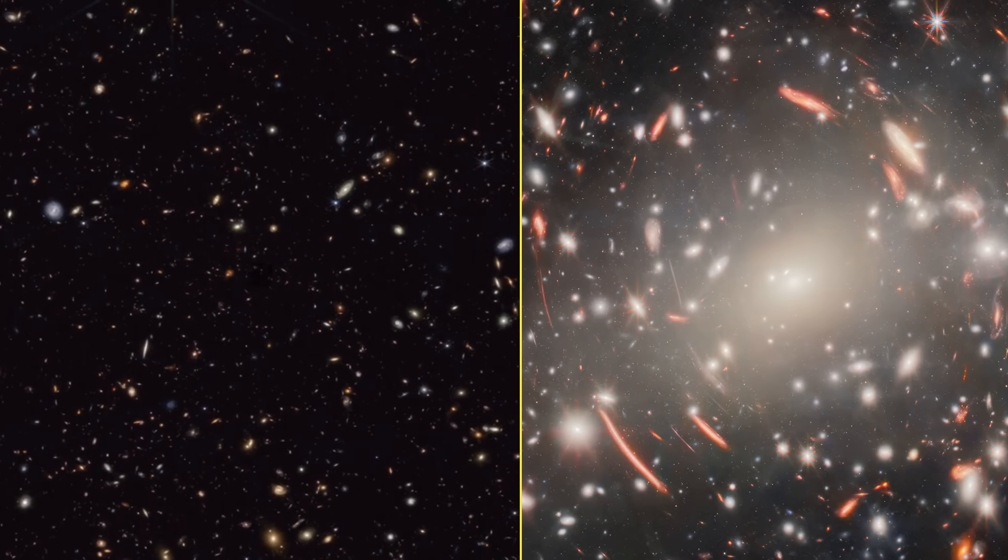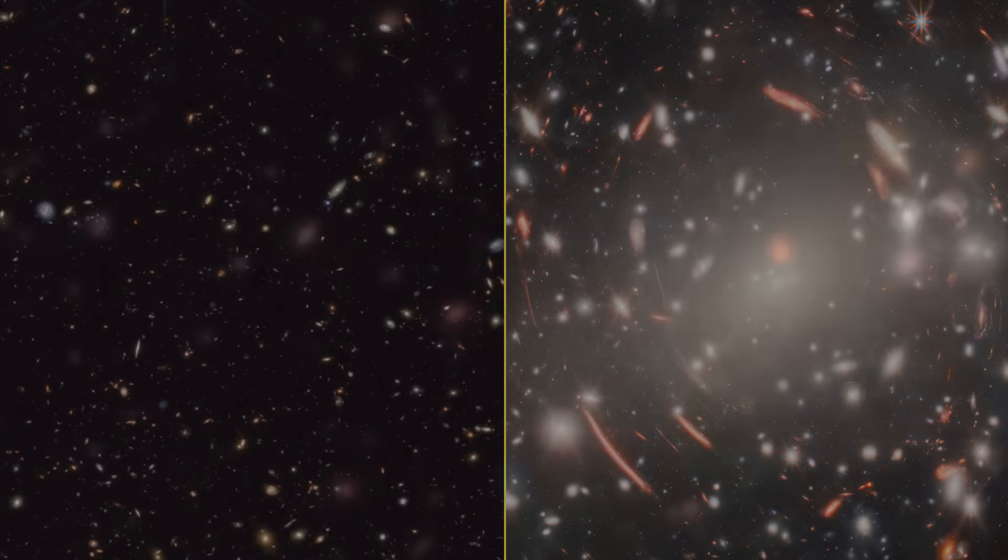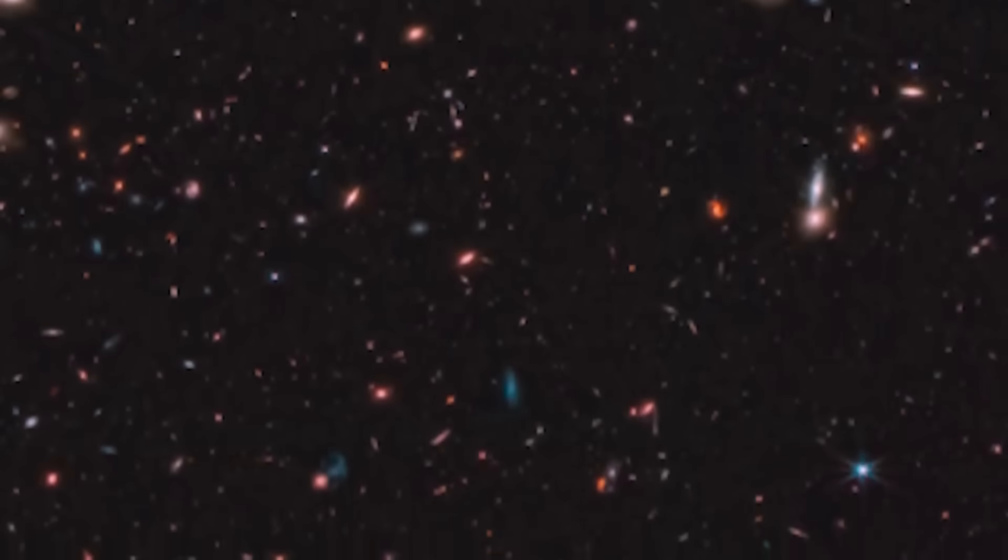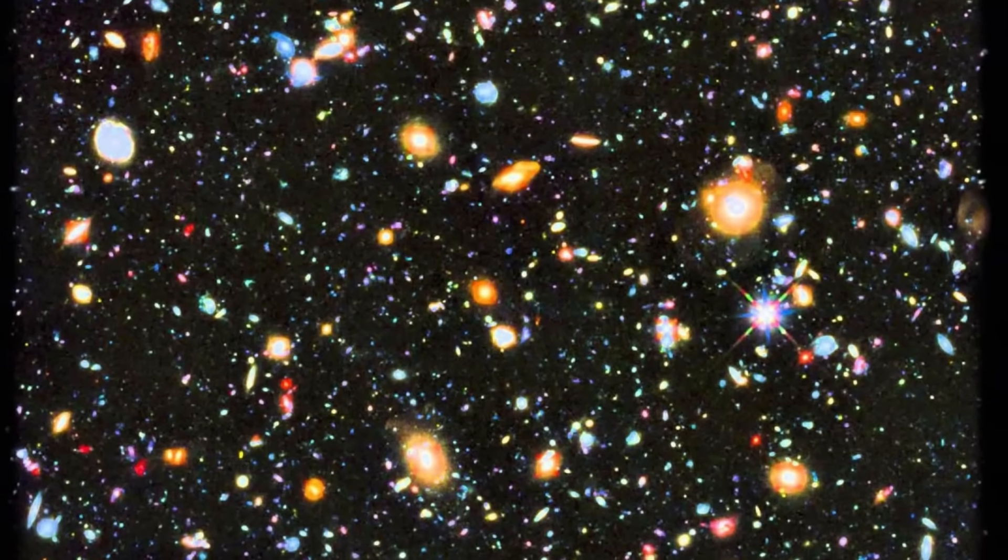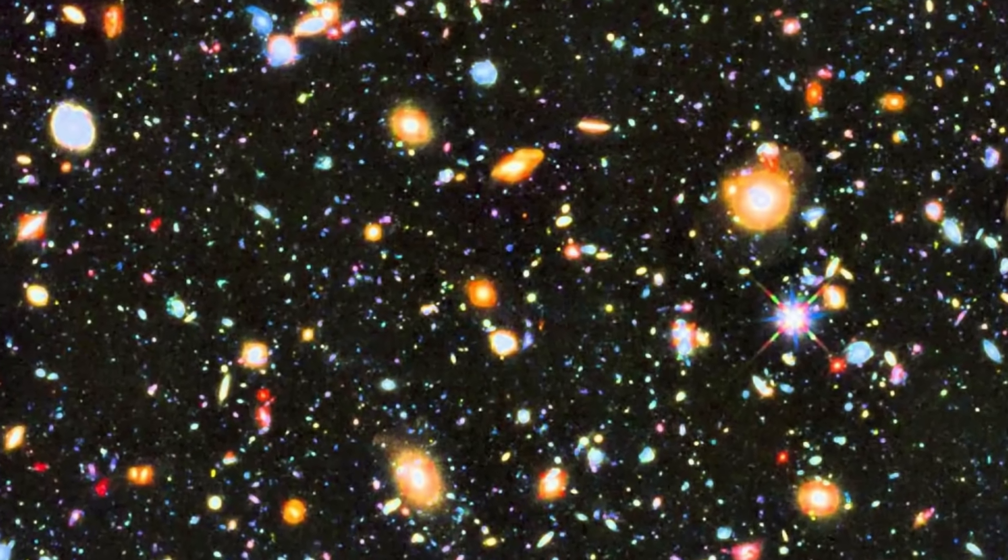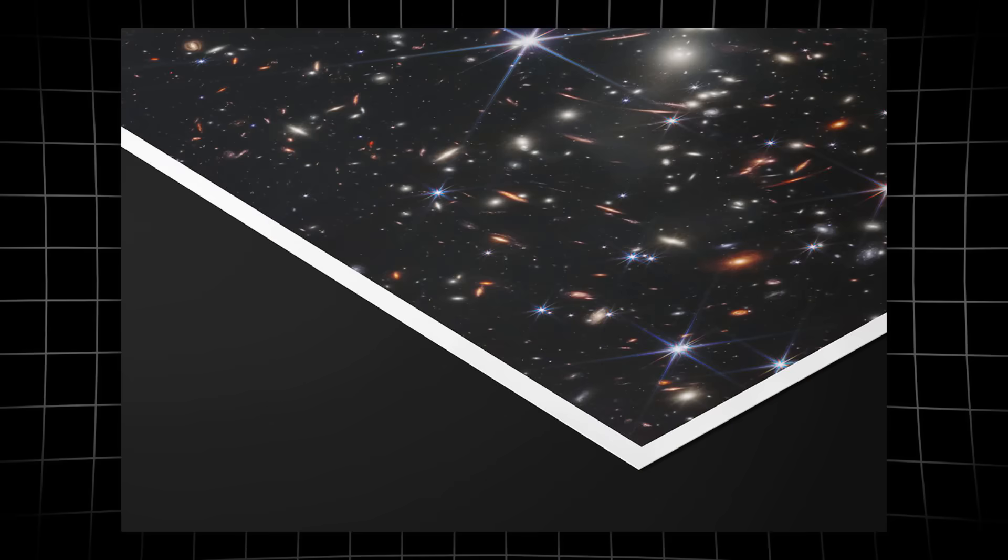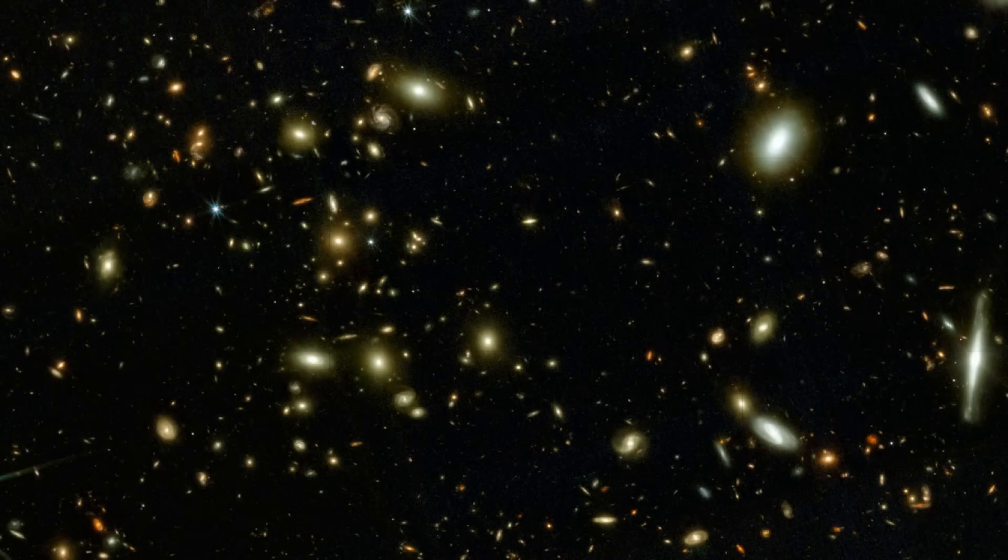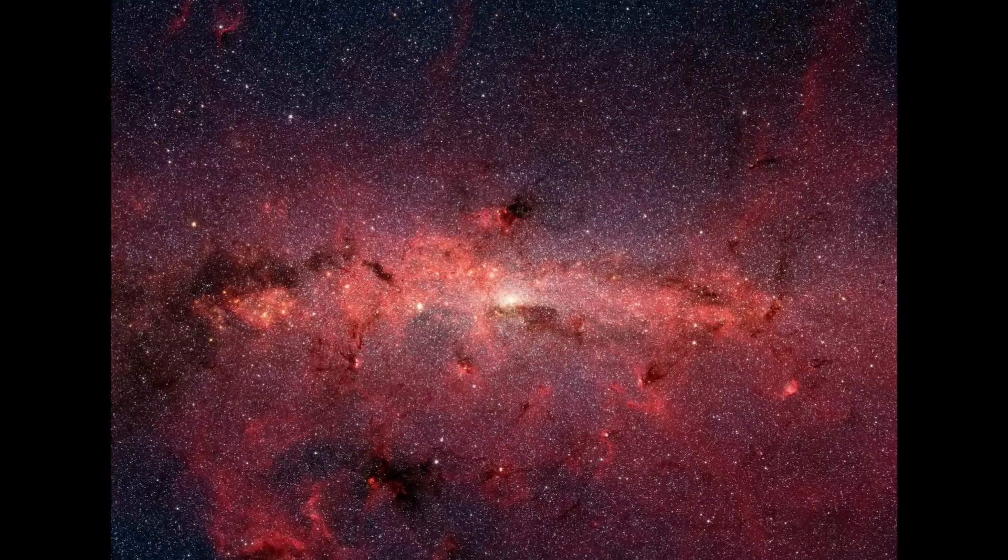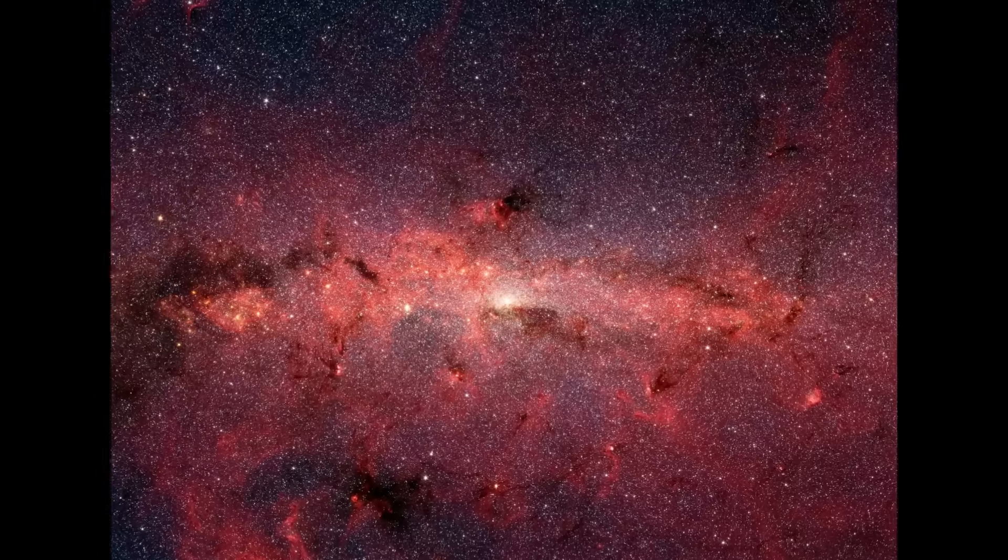Where Hubble's vision was like peering through a keyhole, Webb's is more like stepping back to take in a massive mural. To put the leap in perspective, imagine the Hubble Ultra Deep Field as a photo on a single sheet of paper. At the same depth, Cosmos Webb would fill a mural 13 feet tall and 13 feet wide.